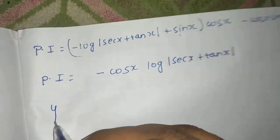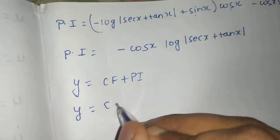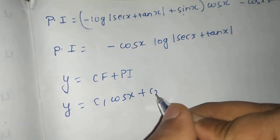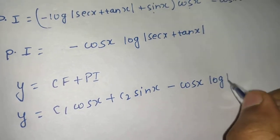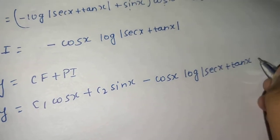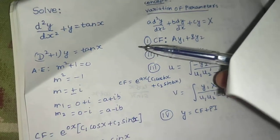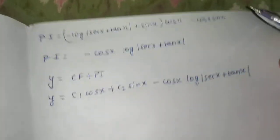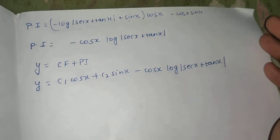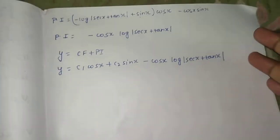The final solution is y = CF + PI, so y = c1·cos x + c2·sin x − cos x·log|sec x + tan x|. To summarize: find the auxiliary equation, then the complementary function, then u and v, then the particular integral, and finally combine for the general solution. I hope you understood this question — we'll see you with more questions of this type. Thanks and have a nice day!